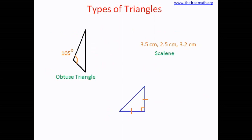Now look at this triangle. You can see that there is a right angle, and you can also see that it has two equal sides. That means this is a right triangle, and it also looks like an isosceles triangle. So this is a right isosceles triangle. What we understand here is that we can combine two types — right and isosceles — and call it a right isosceles triangle.